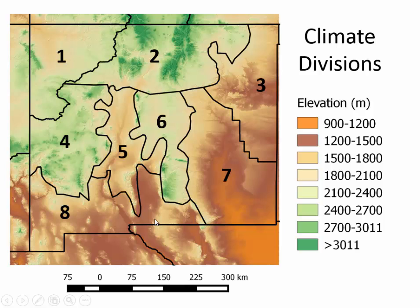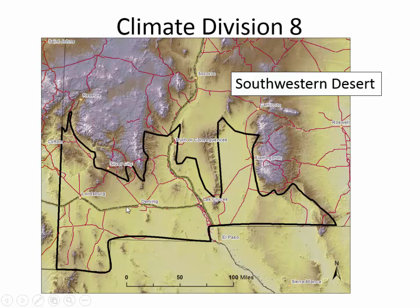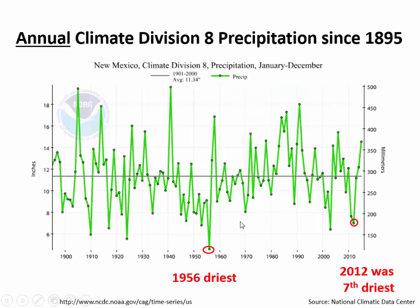Let's find some information on climate division eight — the southwestern desert. It includes all of the southwest, the Boot Heel, Otero County, and lower elevations bordering Texas. Looking at annual precipitation in climate division eight, we have records going back to 1895. Each dot is an annual precipitation amount. Annual precipitation is quite variable — units are inches on the left, going from six to almost 20. On a year-to-year basis, sometimes there's more than four or five inches of variability.